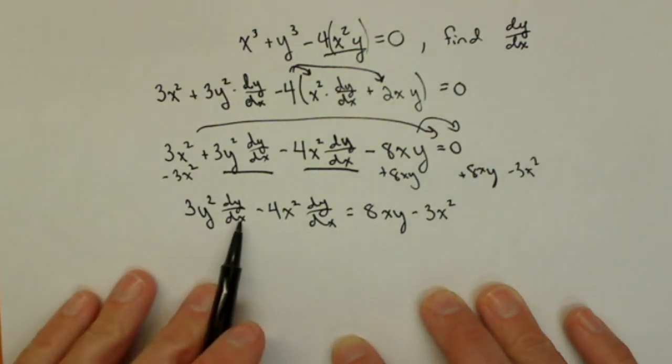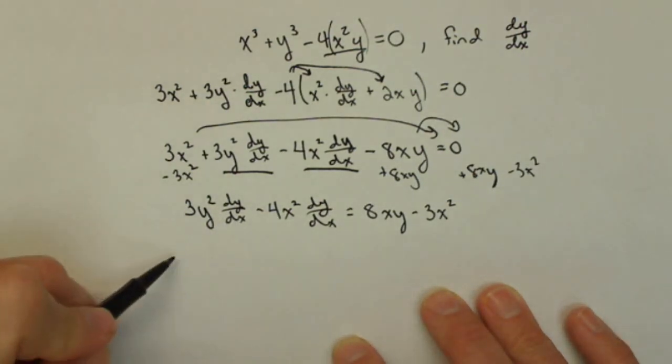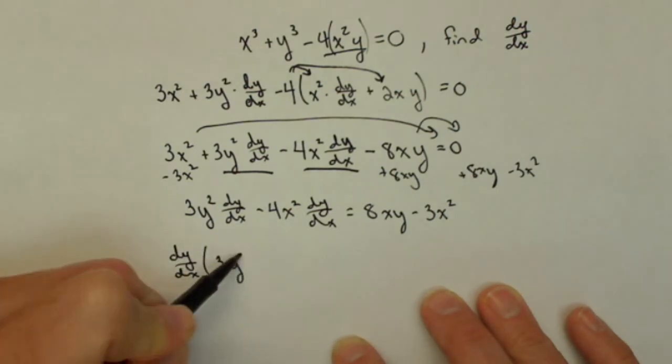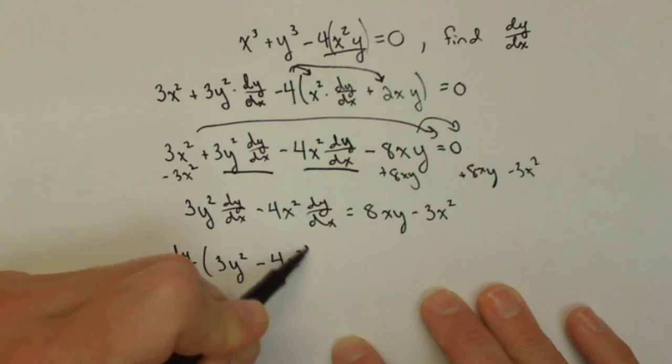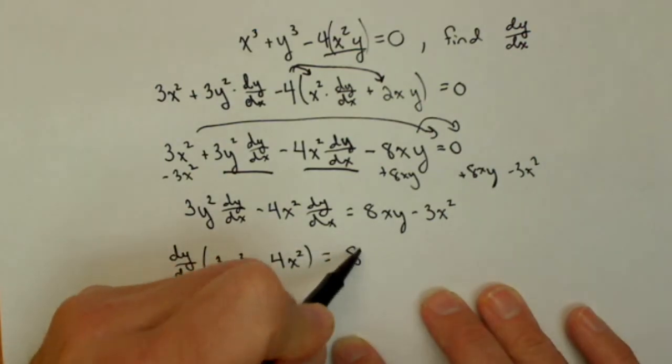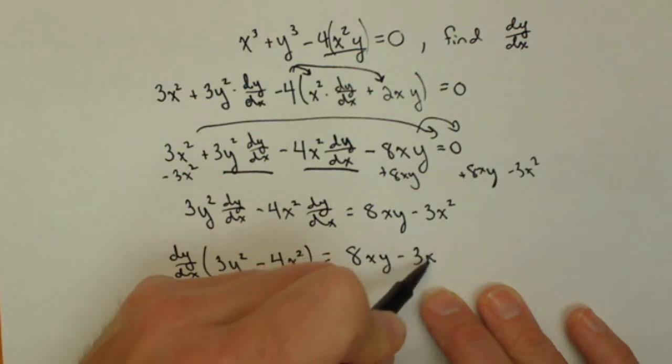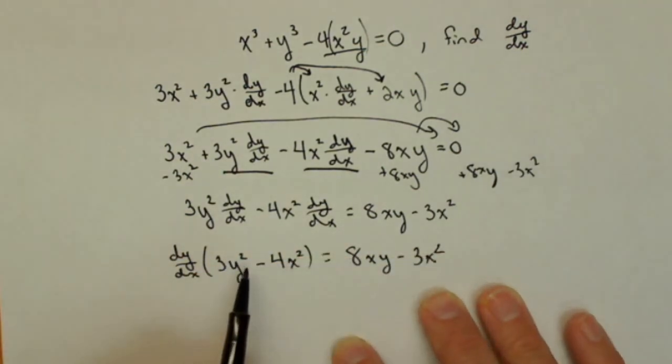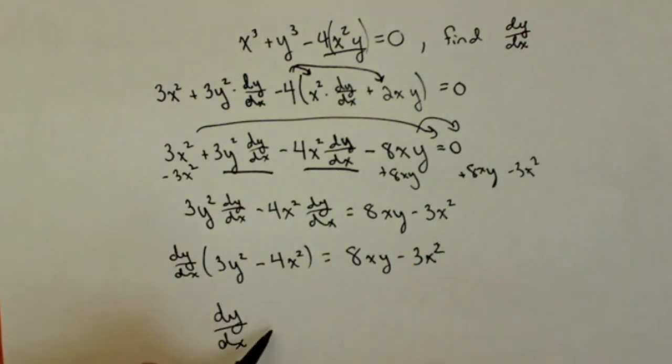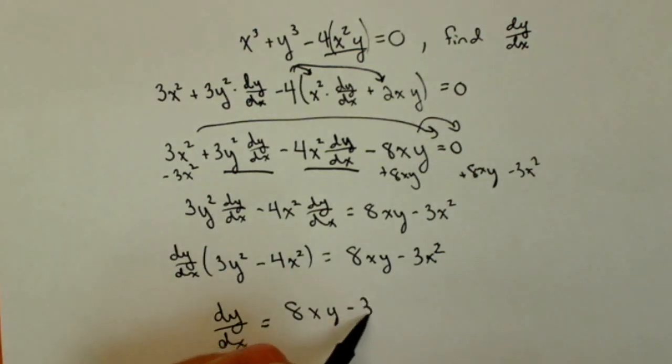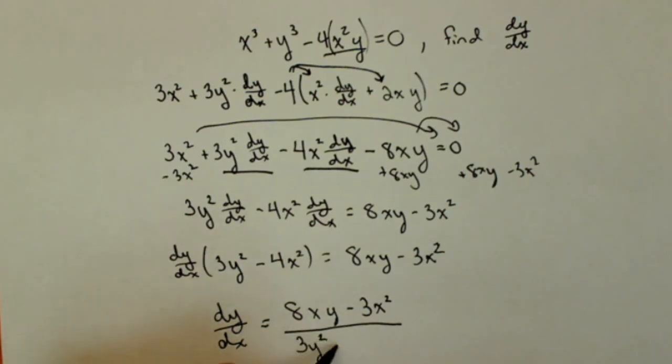Now, on this left-hand side, the reason I do this is now both these terms have dy/dx in it, and I can factor it out. So dy/dx times (3y² - 4x²) = 8xy - 3x², and I'm going to divide by that term to get my dy/dx. So dy/dx = (8xy - 3x²)/(3y² - 4x²), and there, we're all done.